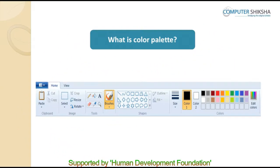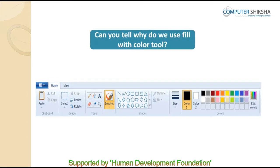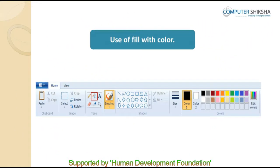What is Color Box? Color Box is used to store colors where any color can be used for drawing on a sheet and much more. Can you tell why do we use the Fill With Color tool? A tool which looks like a bucket is known as Fill With Color. Color can be filled anywhere in the sheet by using it.